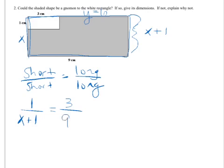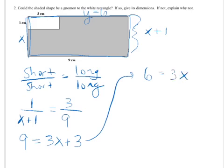Then I cross multiply to solve this. 1 times 9 is 9, and 3 times x plus 1 is 3x plus 3. And then I solve, and I get 6 equals 3x, so x has to be 2.